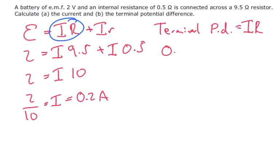Which is going to be 0.2 times 9.5, which equals 1.9 volts. So there we go, the current was 0.2 and the terminal PD is 1.9 volts.